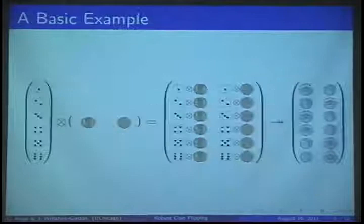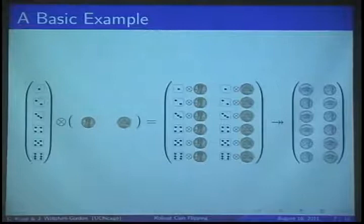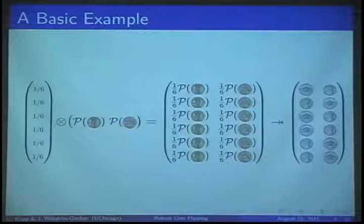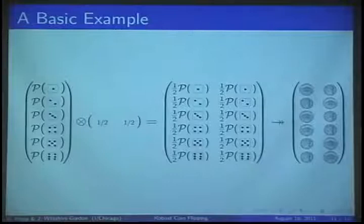Here is an example of a strategy Alice might employ to simulate a fair nickel in the presence of one dishonest party. She asks one party to roll a fair die and another to flip a fair penny. She then assigns a value of heads or tails to each possible combination. Let's see what happens if the dice is fair but the penny is not. Computing the entry-wise matrix dot product, we see that the simulated nickel is nonetheless fair. Similarly, if the penny is reliable, we have a similar situation.